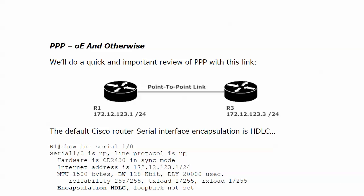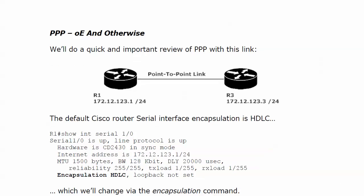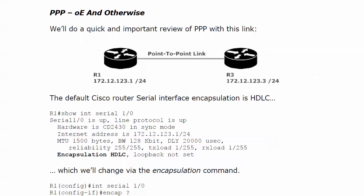Time for a review of PPP, and then we're going to take a very quick look at PPP over Ethernet. We're going to start here with this link between routers 1 and 3, 172.12.123.1 on router 1's side and .3 on router 3's side.